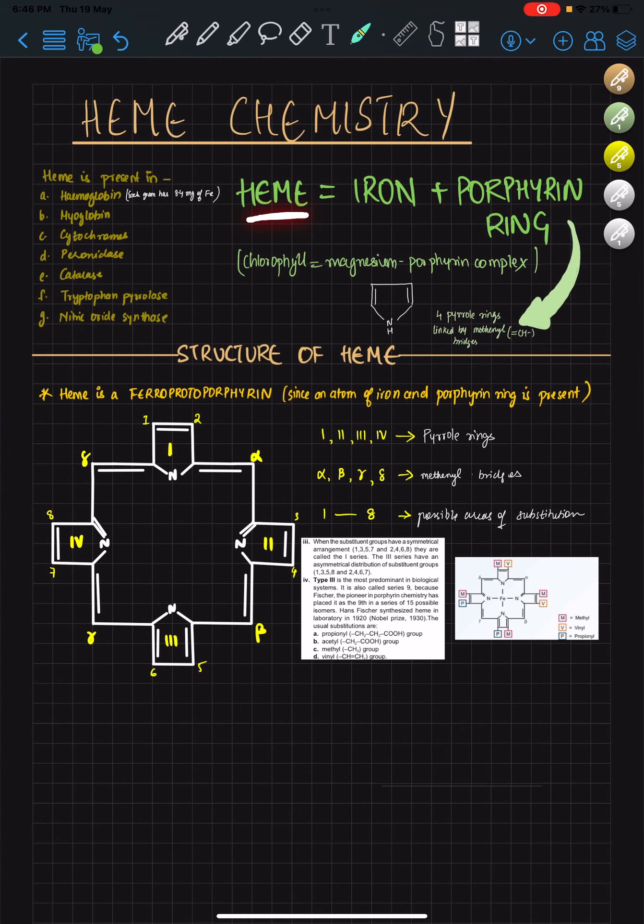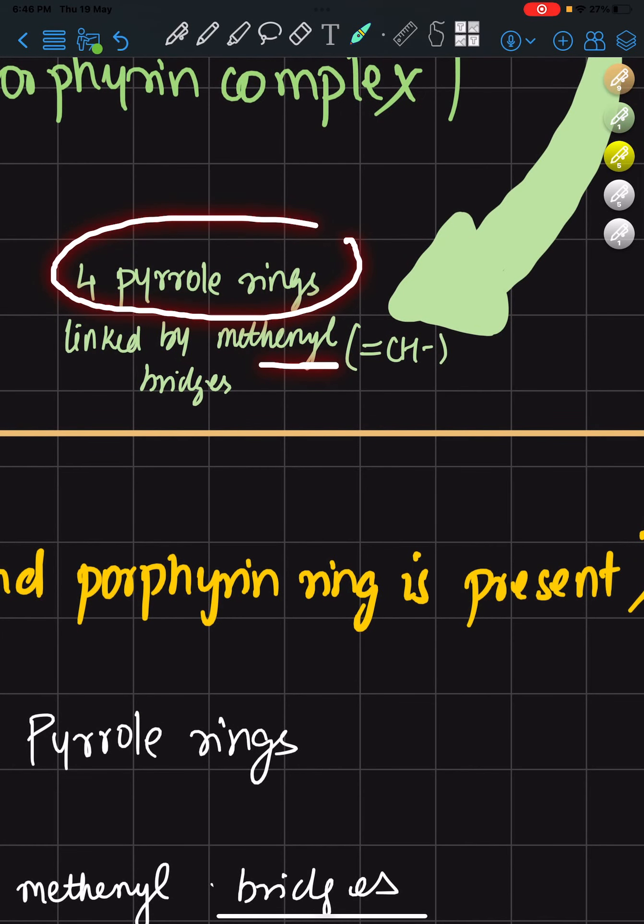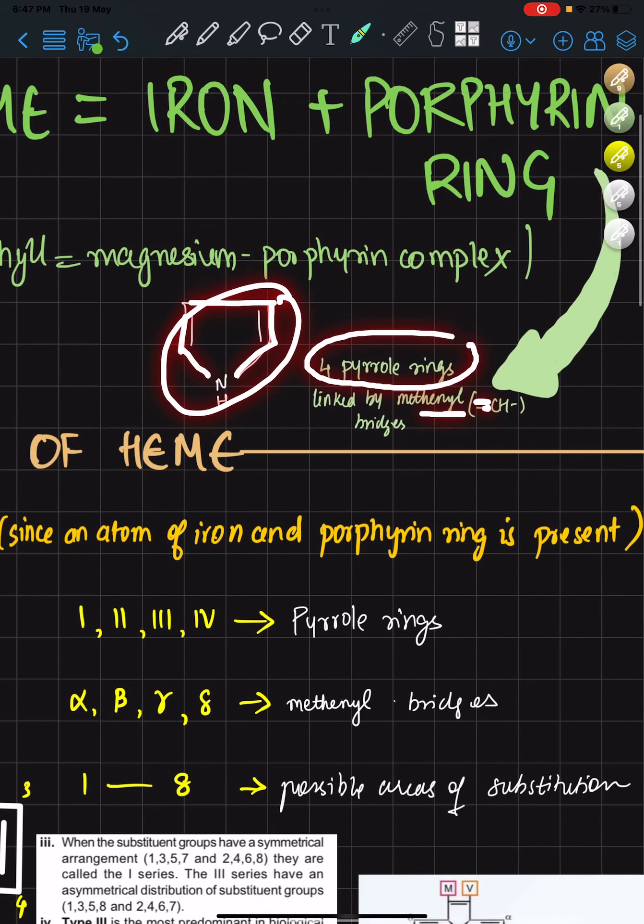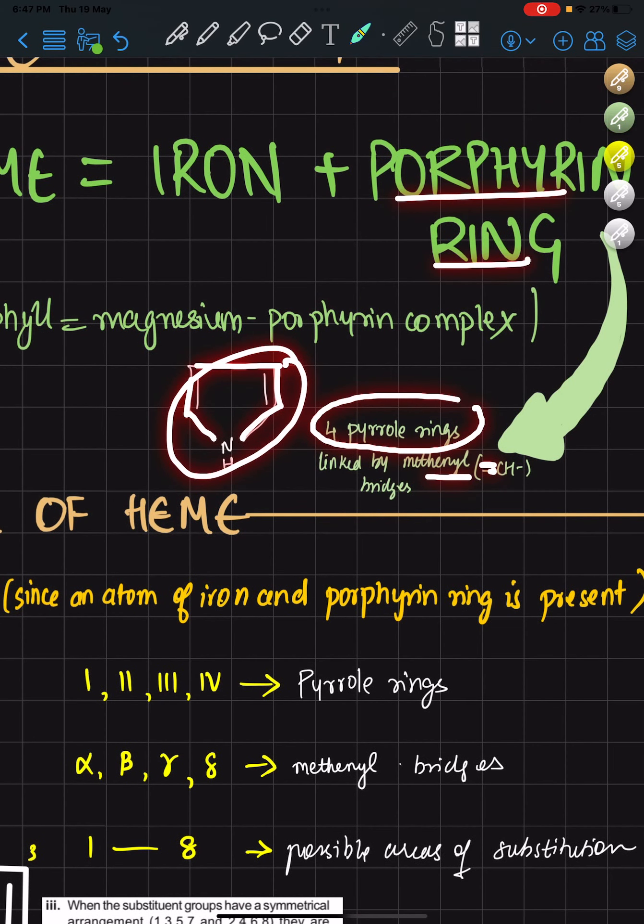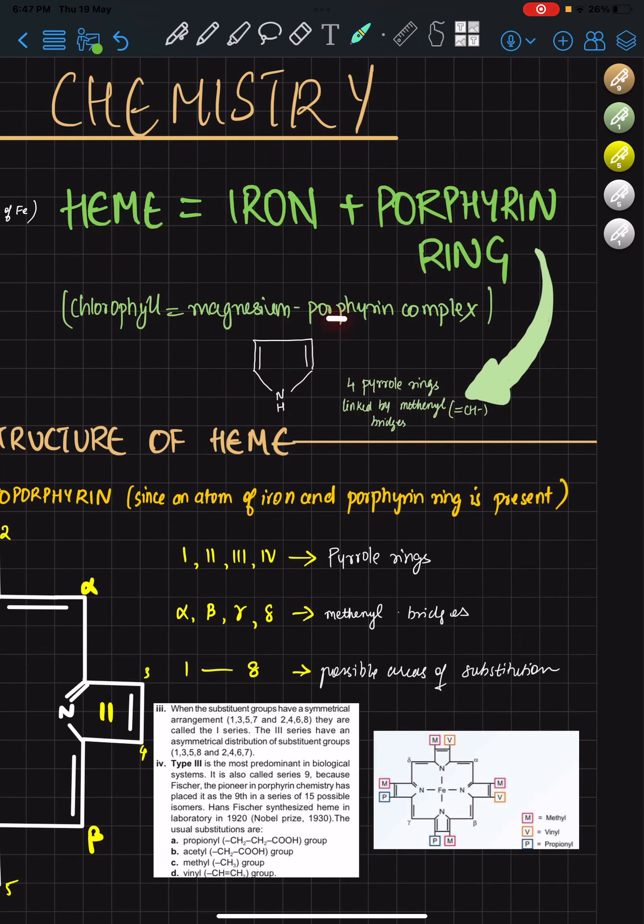So, heme is essentially iron plus a porphyrin ring. Porphyrin is when four pyrrole rings are linked by methanol bridges, which means there is a double bond involved. So four of these pyrrole rings will form one porphyrin ring, and that plus iron gives you heme. Chlorophyll is another example which has a porphyrin complex, but with magnesium instead of iron.